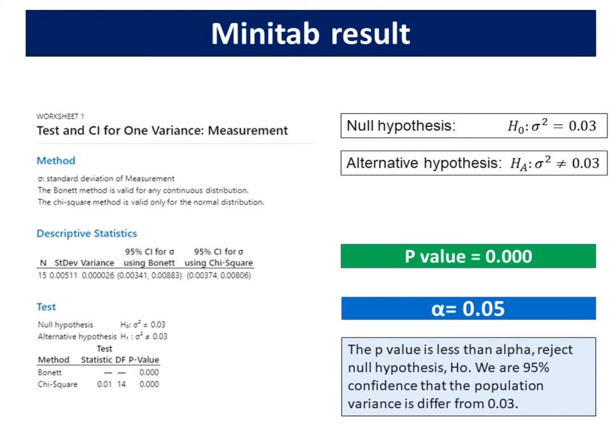You can conclude that the difference between the population variance or standard deviation and the hypothesized variance or standard deviation is statistically significant. We are 95 percent confident that the population variance differs from 0.03.